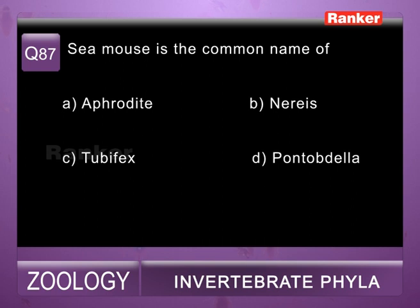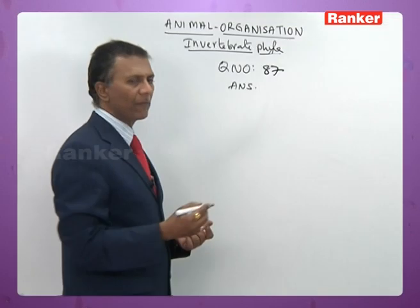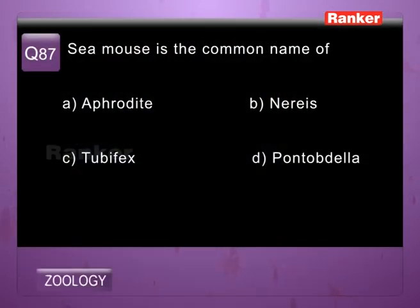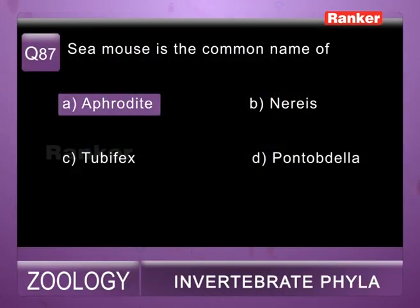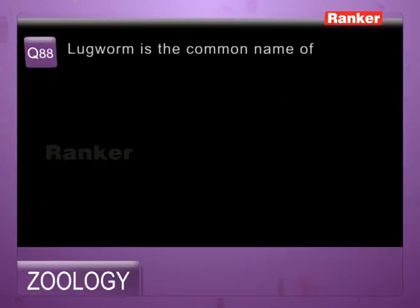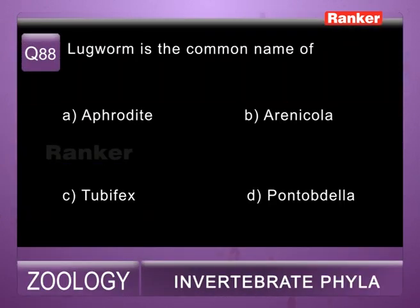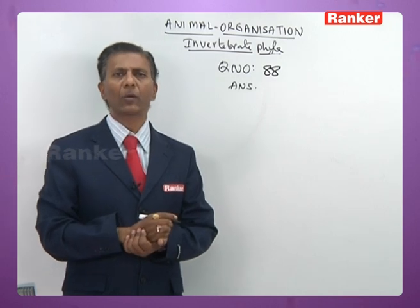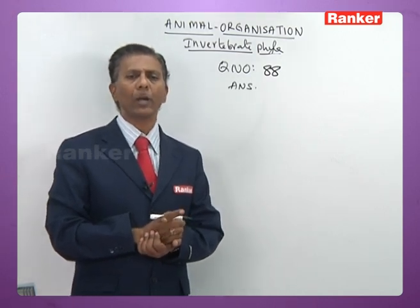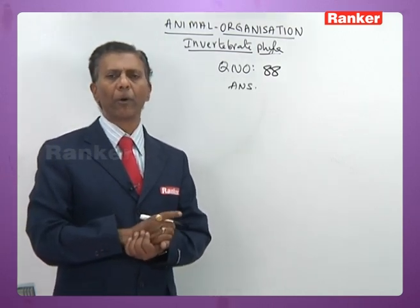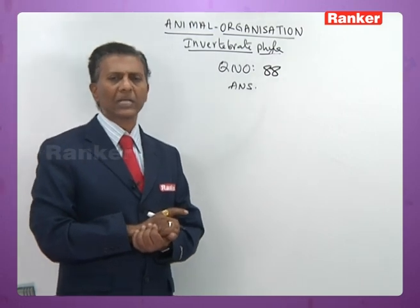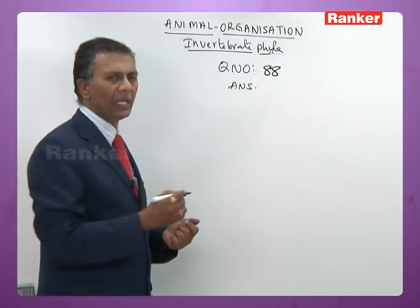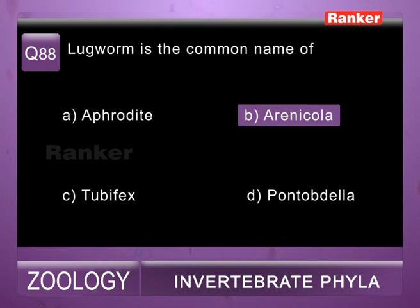Question eighty-seven: sea mouse is a common name of — a) Aphrodite, b) Nereis, c) Tubifex, d) Pontobdella. Aphrodite is commonly called sea mouse. So eighty-seventh question correct answer is a. Question eighty-eight: lugworm is a common name of — a) Aphrodite (sea mouse), b) Arenicola (lugworm or lobworm), c) Tubifex (blood worm), d) Pontobdella (skate sucker). So eighty-eighth question correct answer is b) Arenicola.